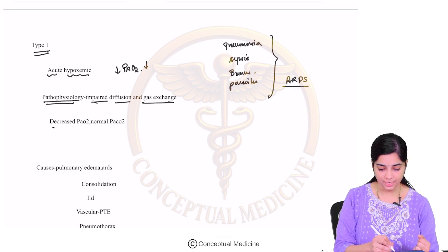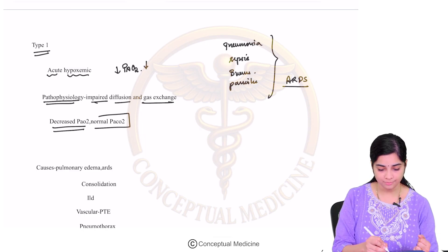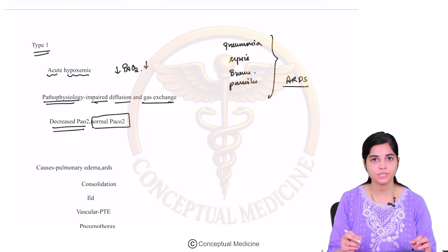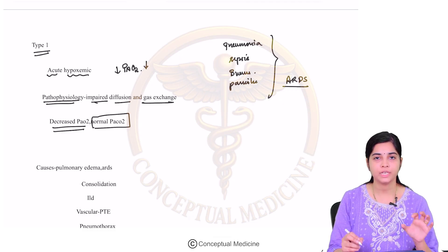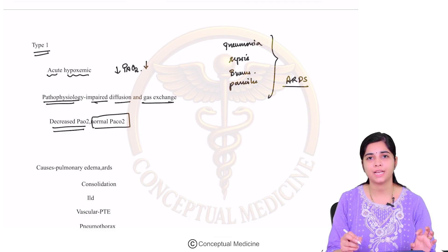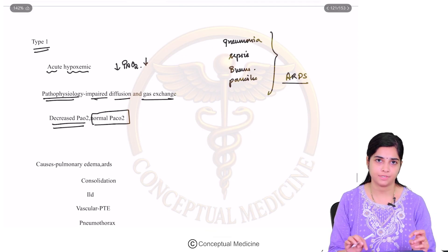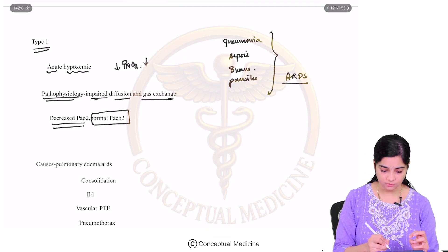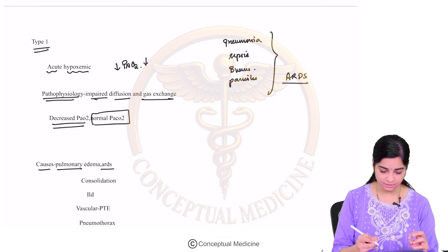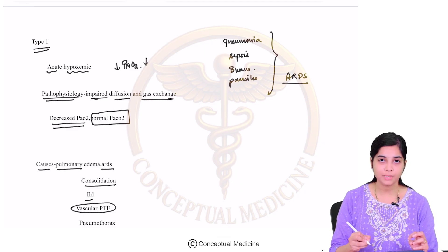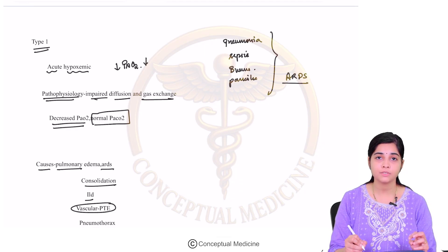In type 1, you have a decreased PaO2 and a normal PCO2. There is impaired diffusion and gas exchange. Any damage to the alveoli or the alveolar capillary membrane can result in type 1 respiratory failure. Causes include pulmonary edema, ARDS, consolidation, ILD, and pulmonary thromboembolism.